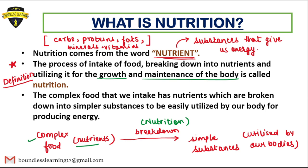The complex food we intake contains nutrients which are broken down into simpler substances. These simpler substances can be easily utilized by our body for producing energy, and they are used for various processes like growth, maintenance, tissue repair, and cell division. This energy requirement is fulfilled by the food that we intake.